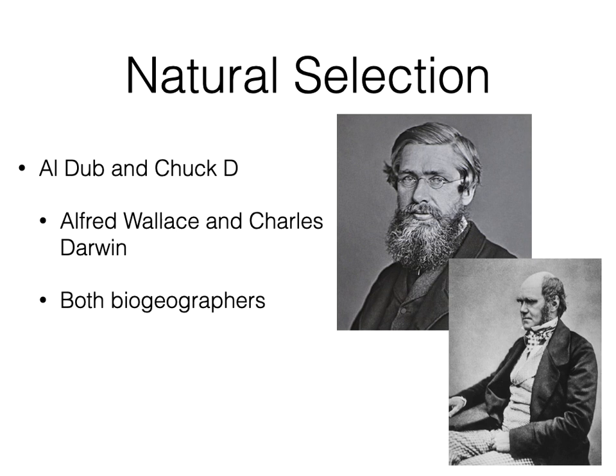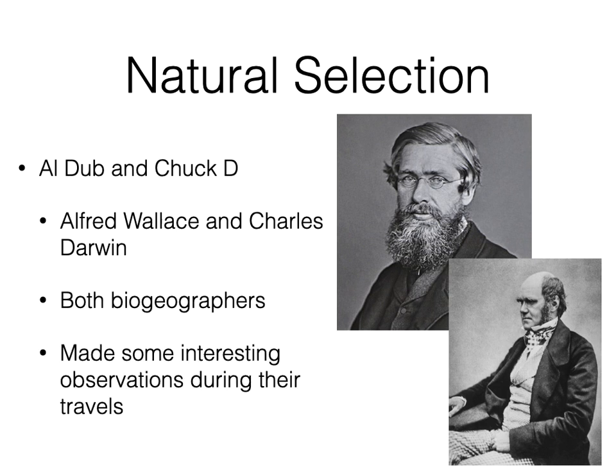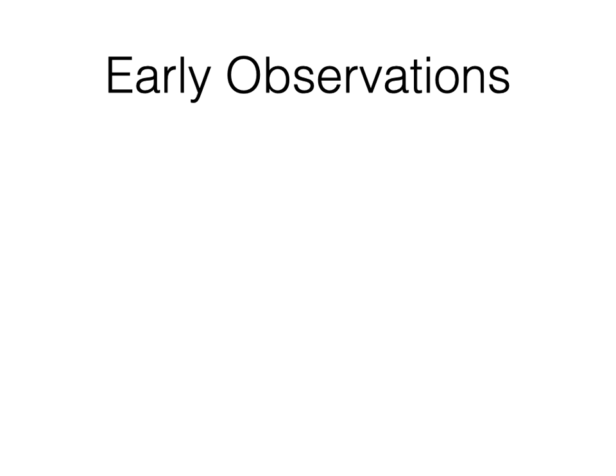Wallace and Darwin explored and collected specimens in parts of the world previously unknown to western Europeans. They made lots of observations and independently came to the same conclusion about how change in species happens. Among their early observations: many populations produce more offspring than the environment can support. Think of sea turtles — females lay hundreds of eggs in the sand, and when the baby sea turtles hatch, they have to run a gauntlet of predators.